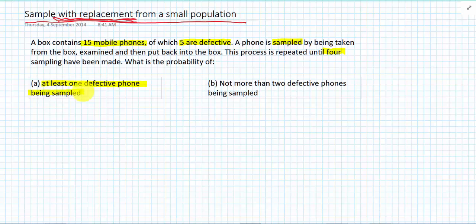What's the probability that at least one defective phone is being sampled? Alright, let's first define some things. We need to define what's success and what's failure. The question is asking about defective, so I'm going to define success as defective phone and failure as non-defective.